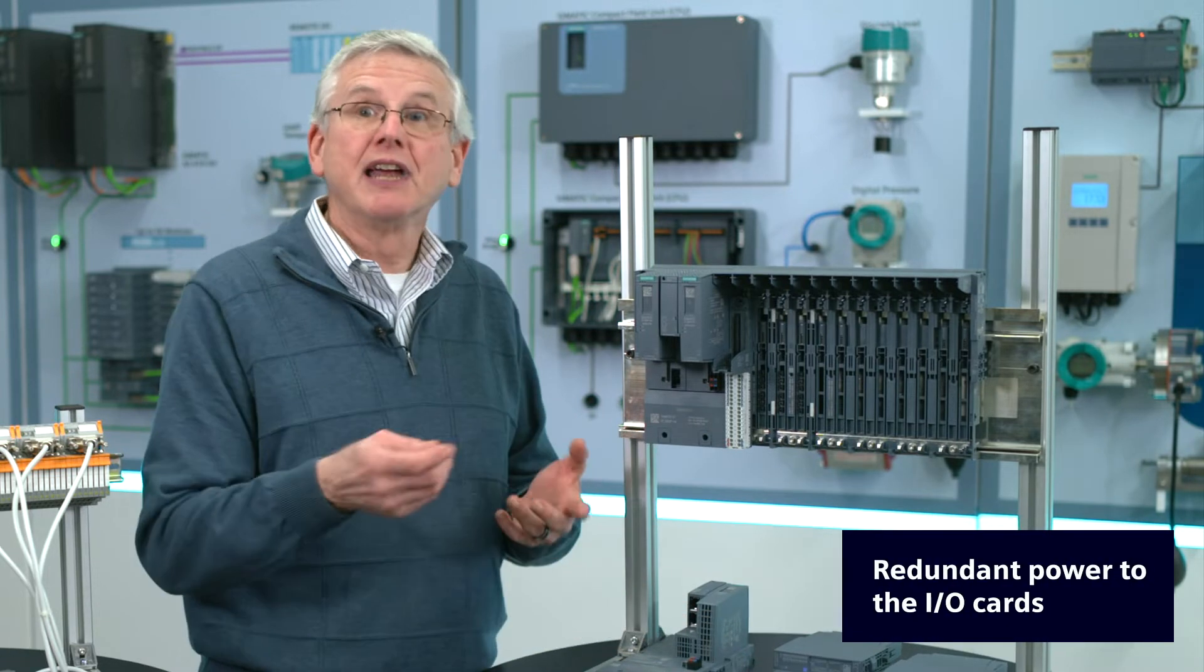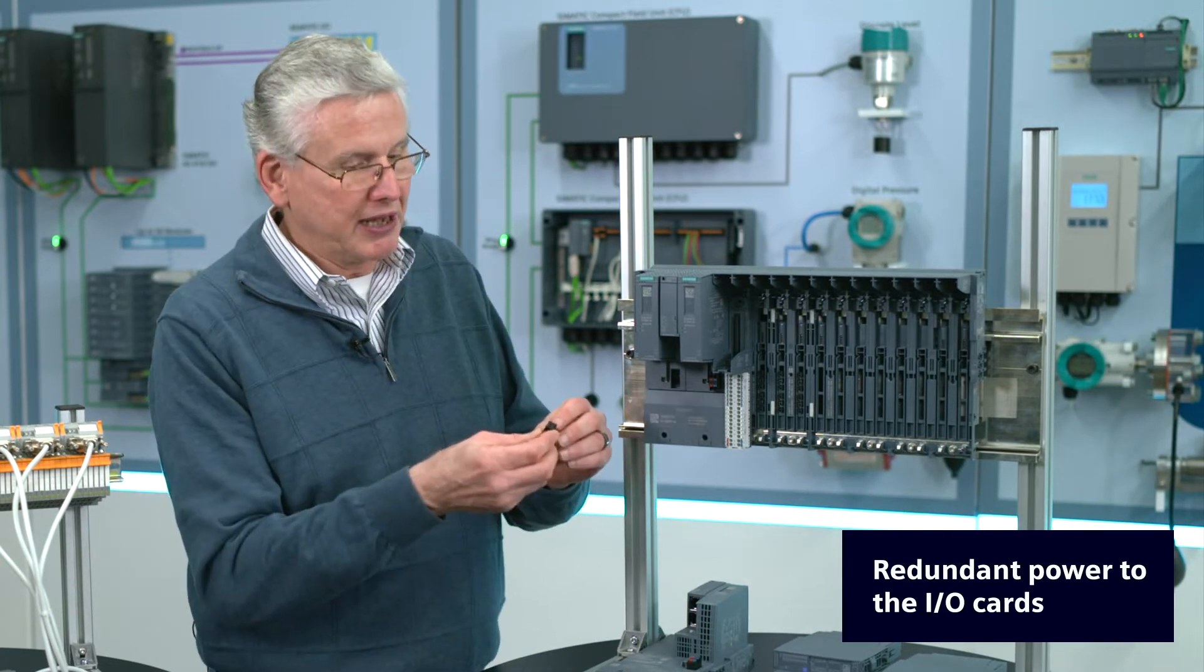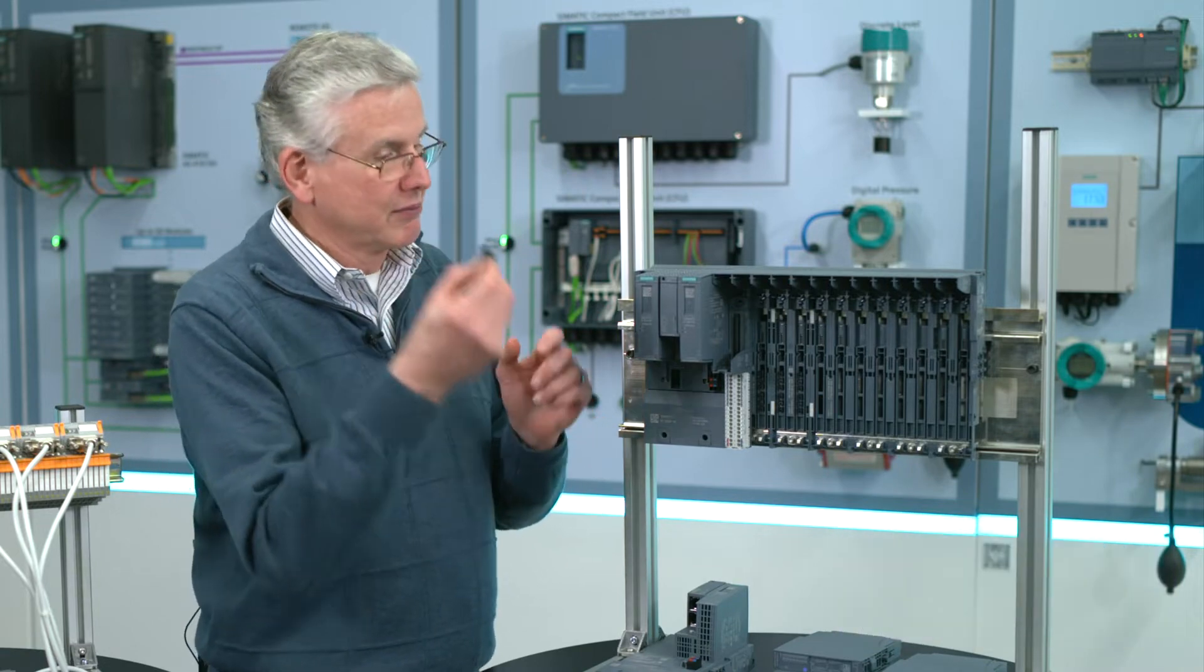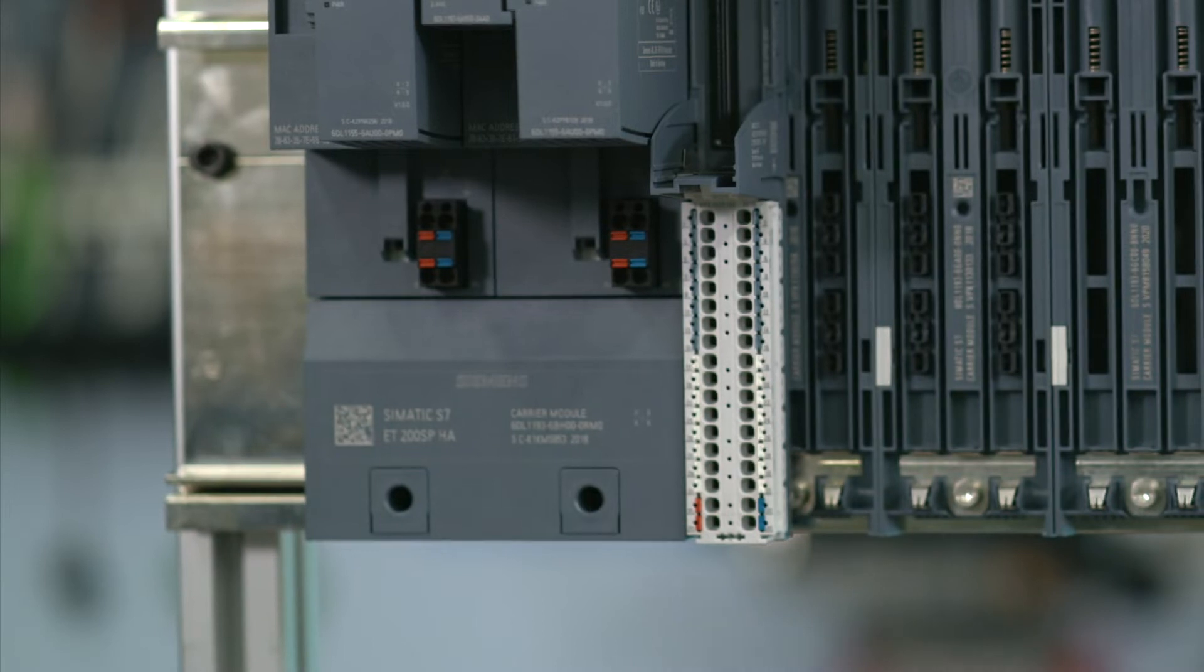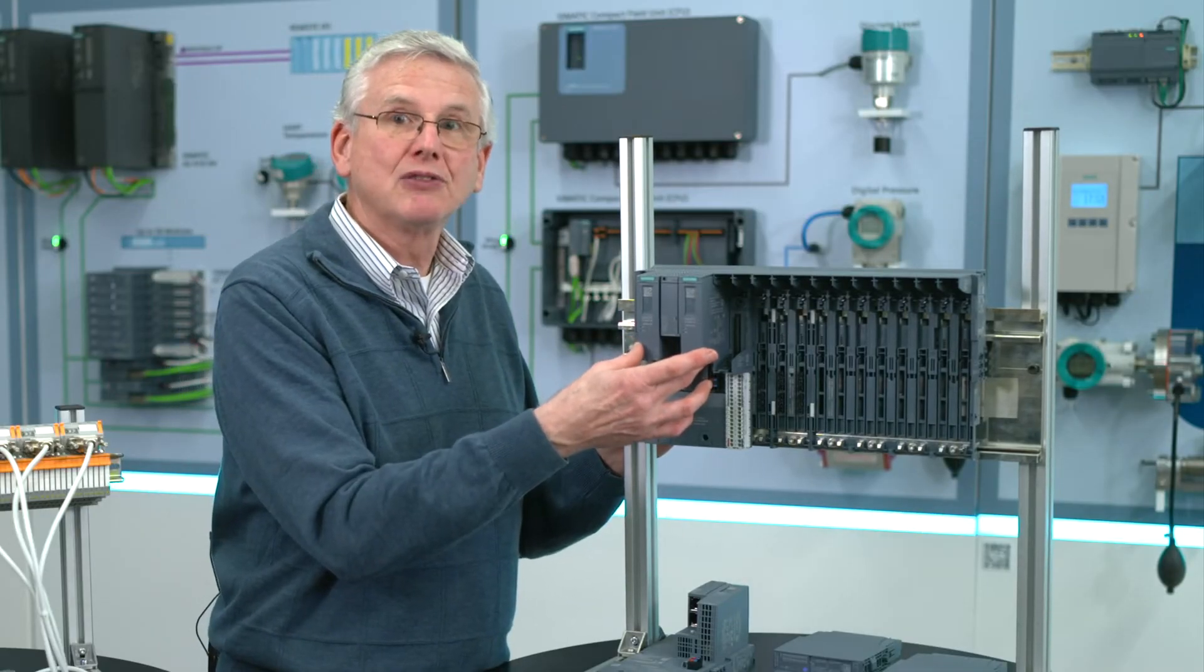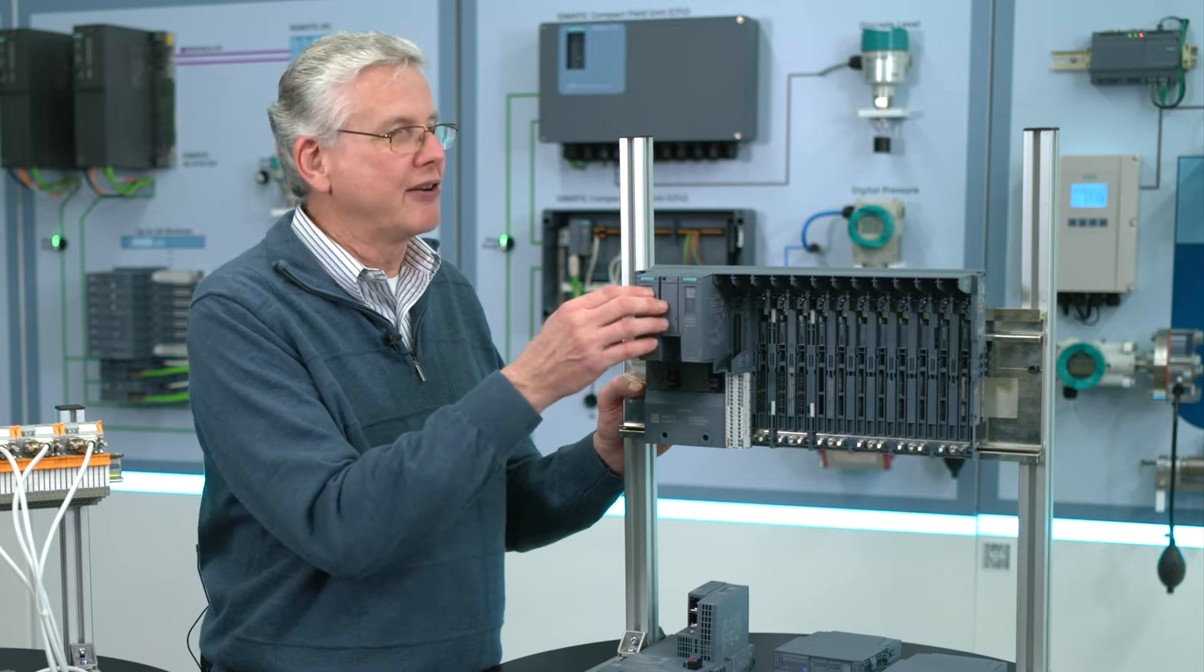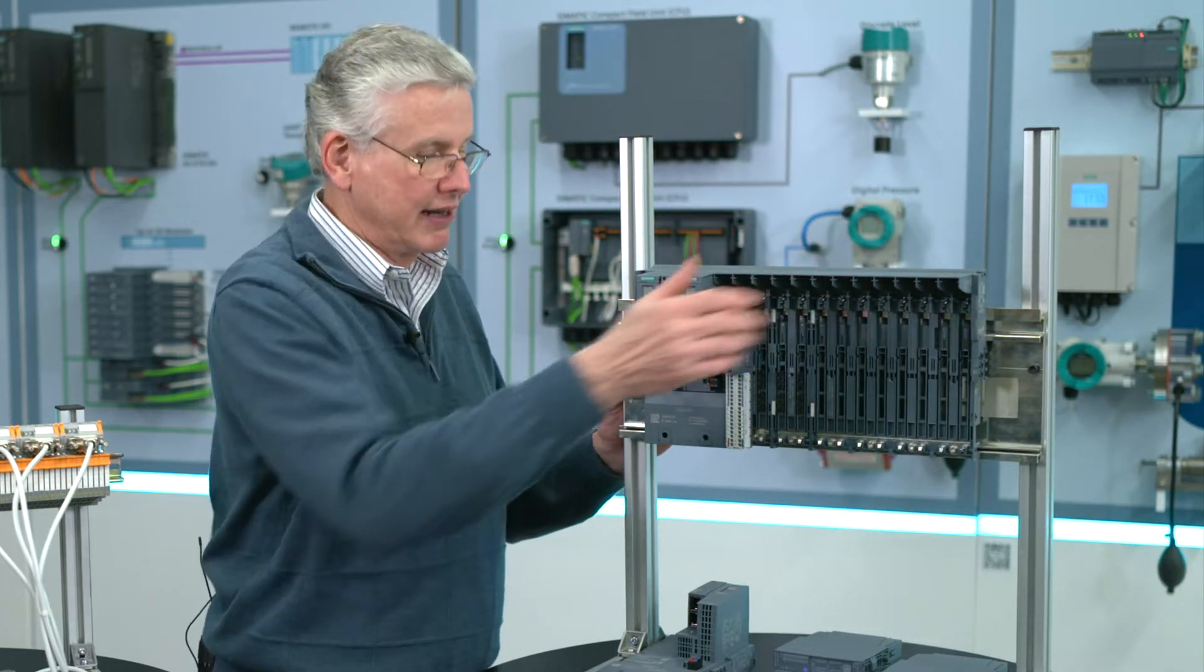And I talked about redundant power. On each of the IMs, there's a place for power. So we just have to plug in that little connector, and that gives me a place to bring in power. So power comes into both interface modules, and then basically it's oared together and provides all the power for the module electronics that are in the rail itself.